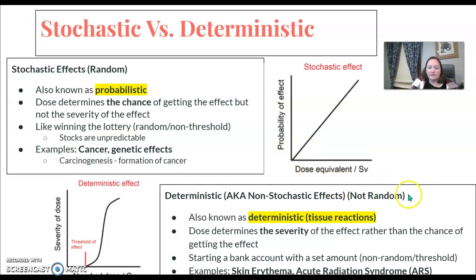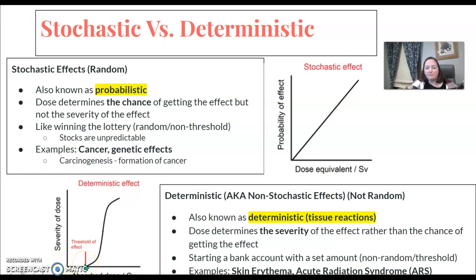Deterministic is not random. It involves tissue reactions. The dose determines the severity of the effect, not the chance. You have to be exposed to a certain amount of radiation before you see skin reddening or acute radiation syndrome. So it has a threshold involved.